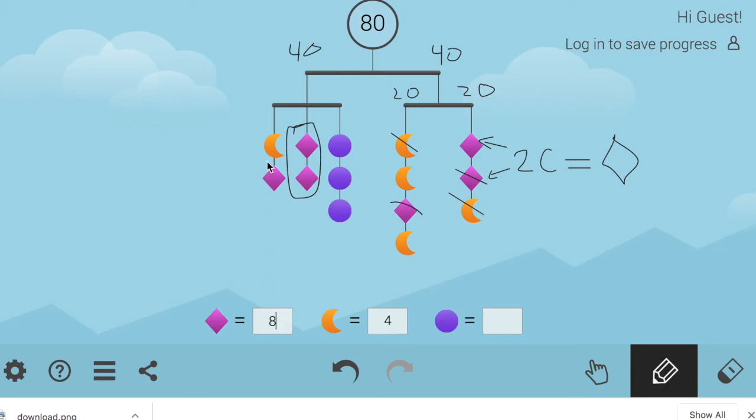If a moon equals four, then a diamond must equal eight. So if a moon equals four and a diamond equals eight, that means that together this is 12. That balances with these three, which together should be 12. Let me just double check this total: 12, 12, and 16 is 24 plus 16 is 40. I think we're good.